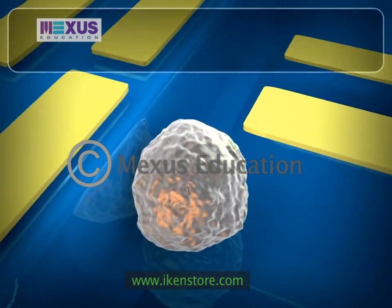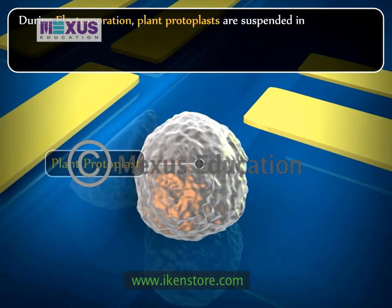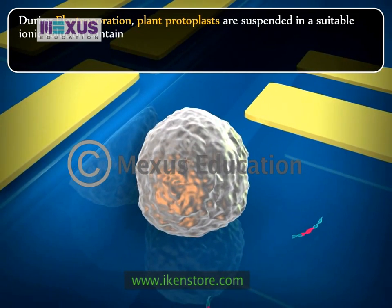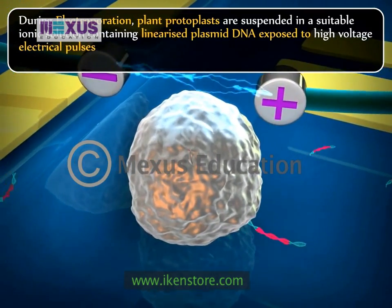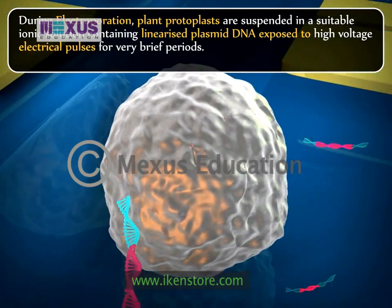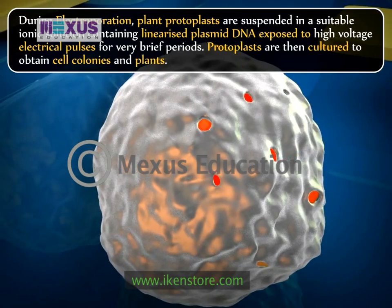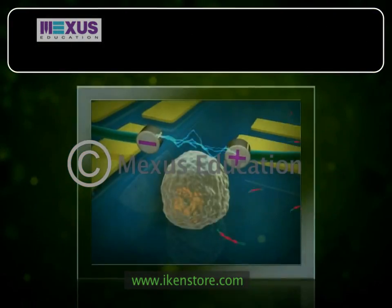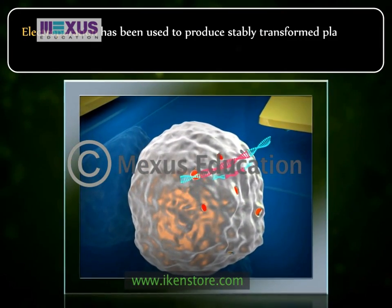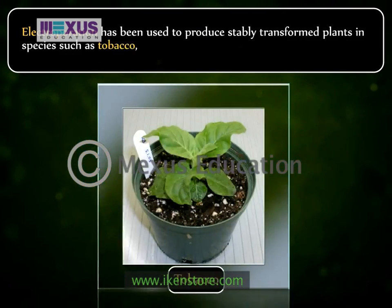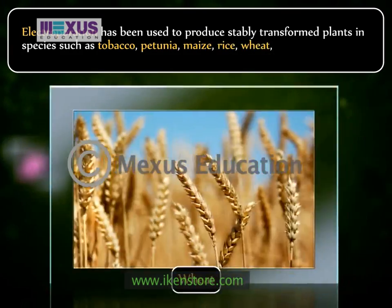The second method is electroporation. Plant protoplasts are suspended in a suitable ionic solution containing linearized plasmid DNA and exposed to high-voltage electrical pulses for very brief periods. Protoplasts are then cultured to obtain cell colonies and plants. Electroporation has been used to produce stably transformed plants in species such as tobacco, petunia, maize, rice, wheat, etc.